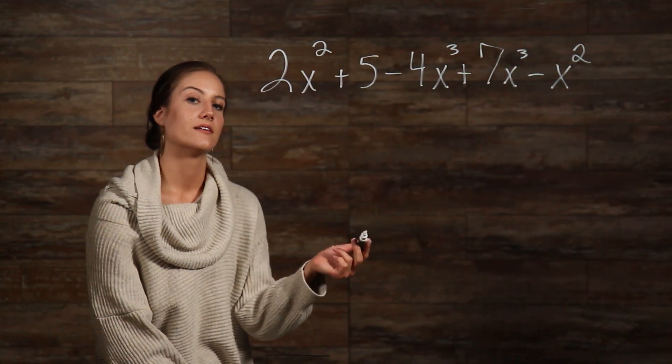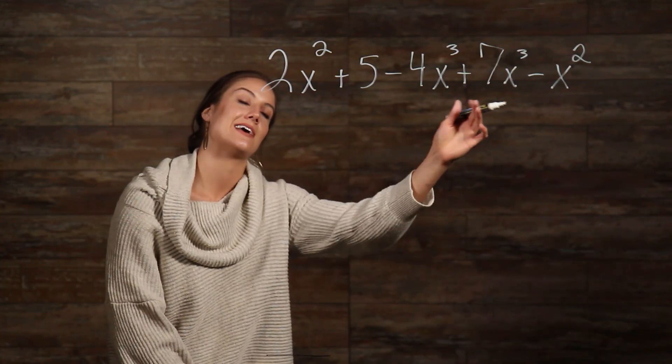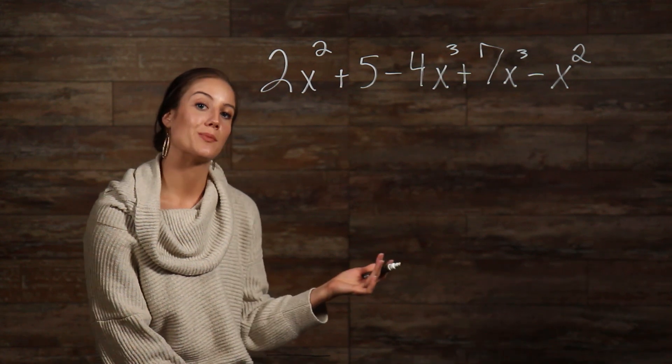our negative x squared, our 5 is on its own, and negative 4x cubed plus 7x cubed share identical base and exponents.